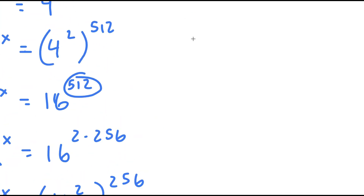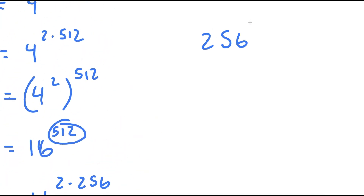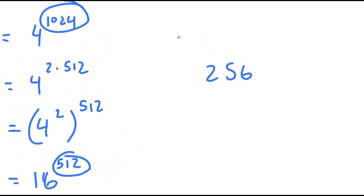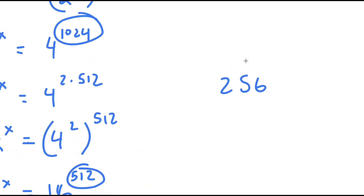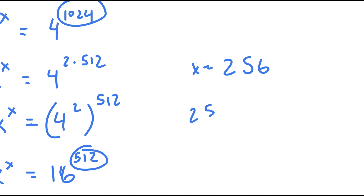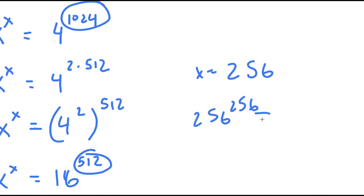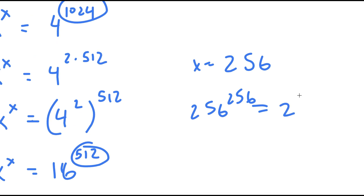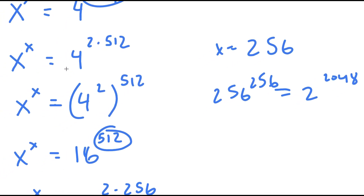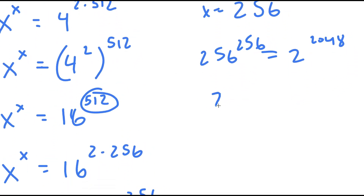To verify, I plug in x equals 256: 256 to the power of 256 should equal 2 to the power of 2048. And since we just derived that 2 to the power of 2048 equals 256 to the power of 256 through our factoring steps, the answer checks out. So x equals 256 is confirmed.